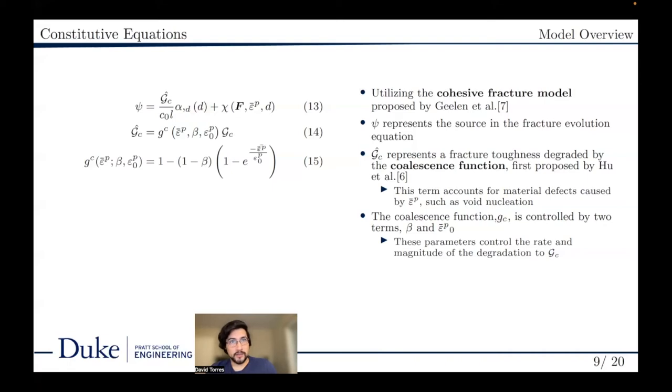The phase field model is coupled to plasticity through the coalescence function. This was proposed by Hugh and others, and it is a method of degrading the fracture toughness in a way that represents material degradation due to plasticity. Through this, microstructural defects are approximated and implemented at a continuum level.